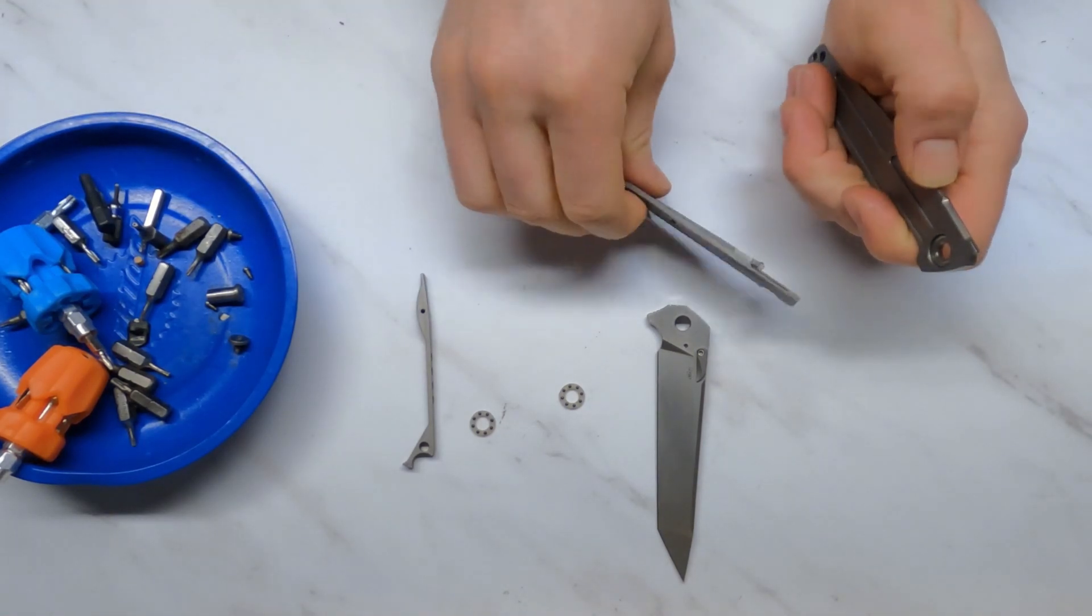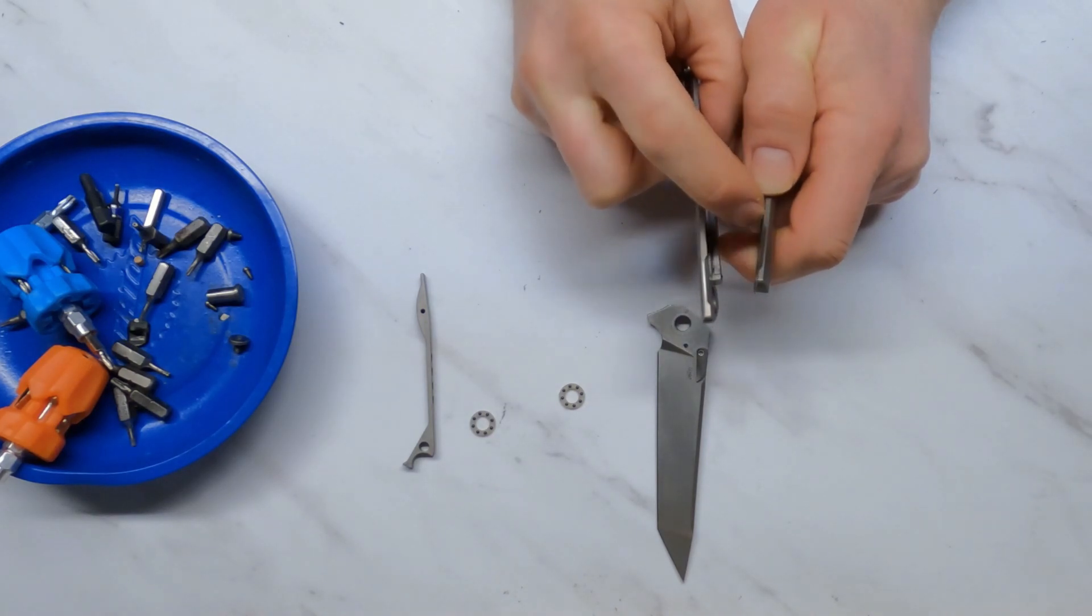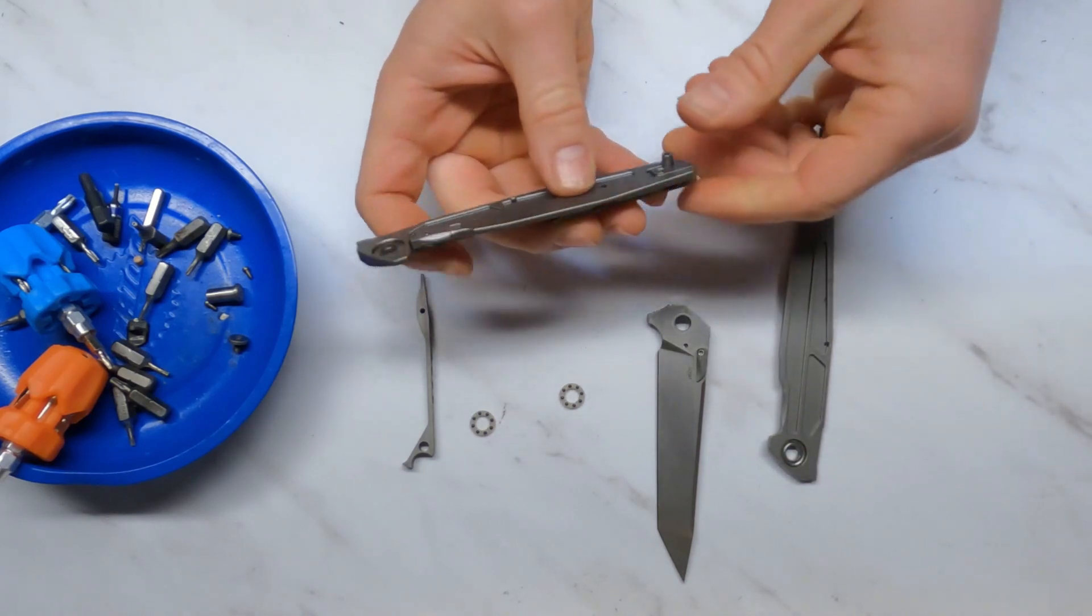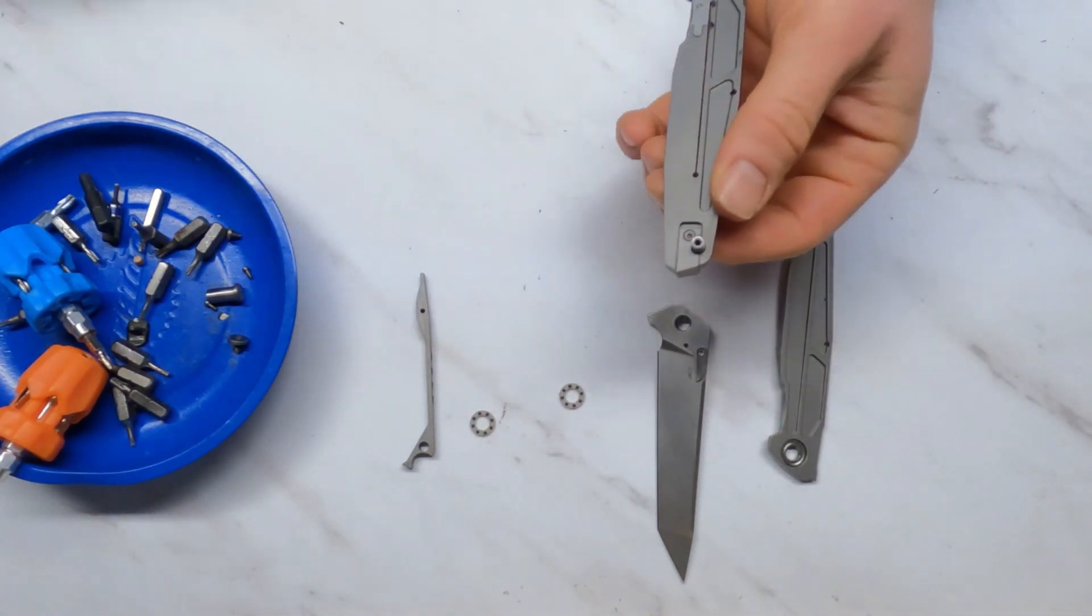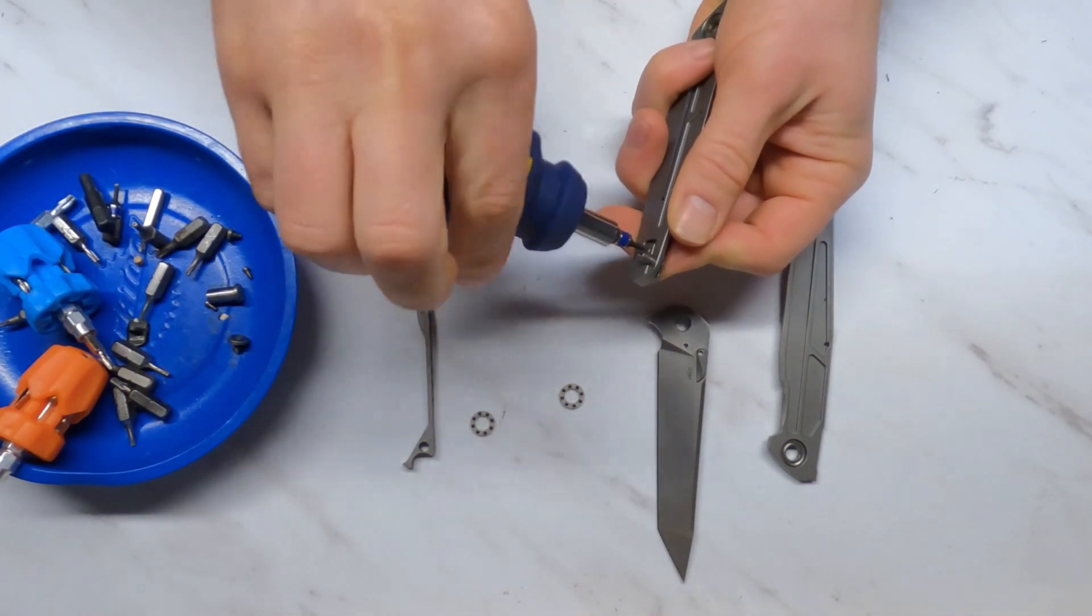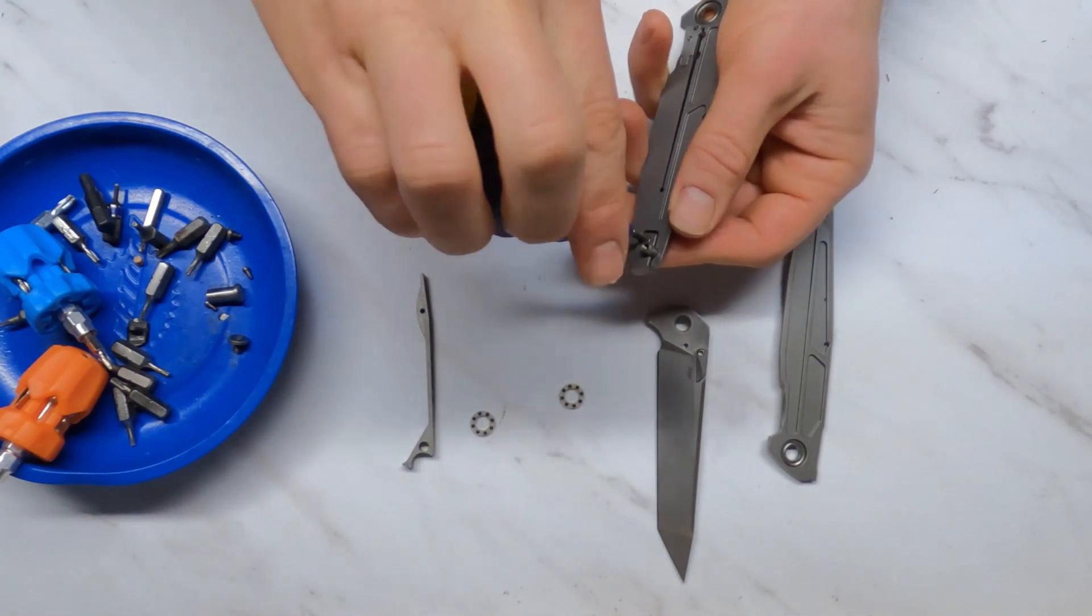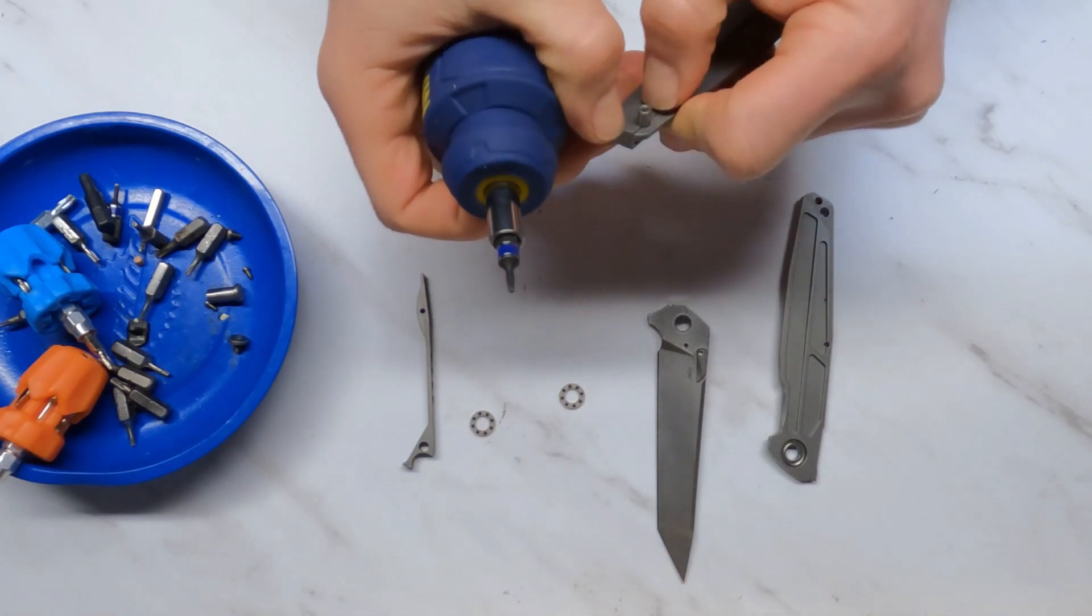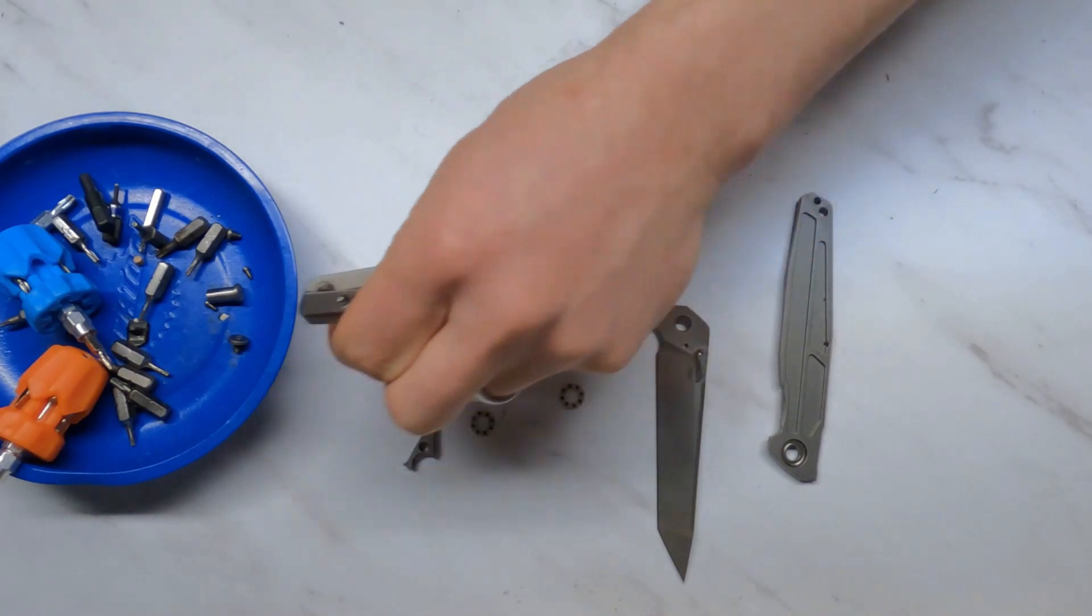One issue I did have with this is at least at first, that little shelf there by the flipper when you flip it open tends to catch your finger a little bit. I noticed it at first; after carrying the knife for a little while I didn't notice it as much. Here is the bolt for the pocket clip. Definitely I would put some Loctite on that because if that comes loose, it's going to be really annoying to disassemble the whole knife to get it out. There's the tiny little bolt, and this is tricky to get out - that pocket clip is stuck on there.